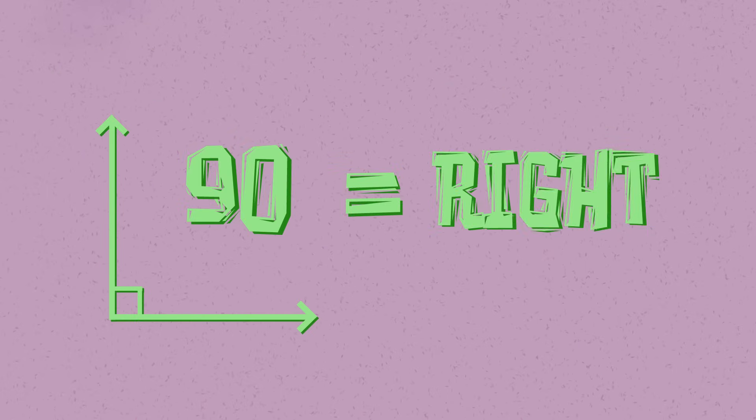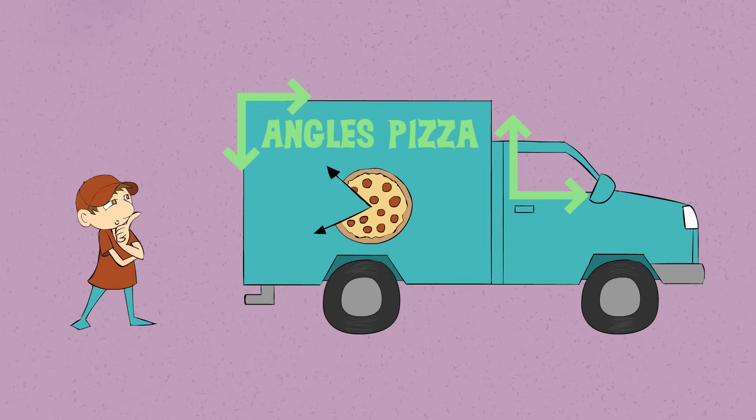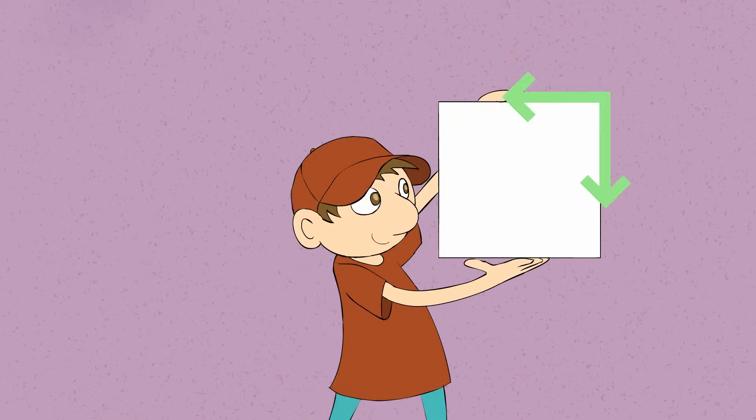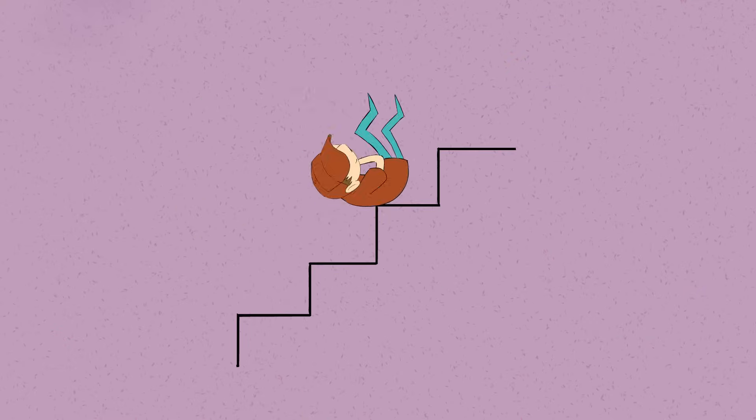Only when an angle measures 90 do we call it right. You can tell this angle just by sight. It looks like an L, or the corner of a square. You're looking at them when you're walking up the stairs.